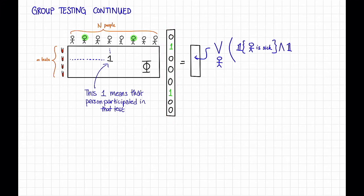that is 1 if that person is sick that corresponds to the value in this vector, anded with the Boolean vector that is 1 if the person participates in this test here. And this corresponds to the relevant entry in that row.